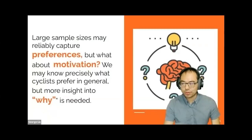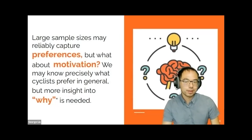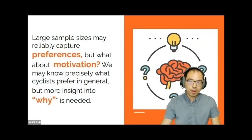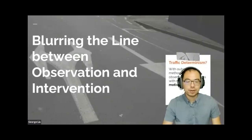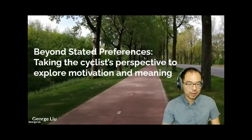George returns to the original question: large sample sizes may reliably capture preferences, but what about motivation? By understanding more of the 'why,' we can better understand what research needs to be conducted and identify blind spots in cycling research. That's why we need to go beyond stated preferences and explore motivation and meaning in how cyclists interact with the world.